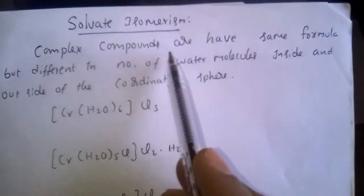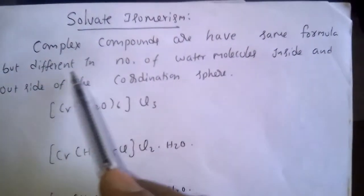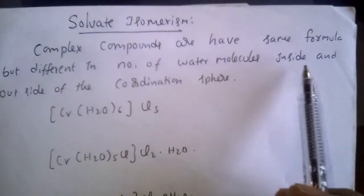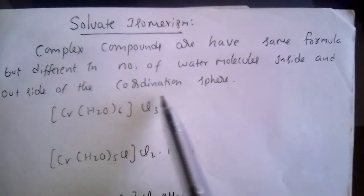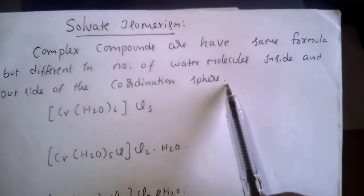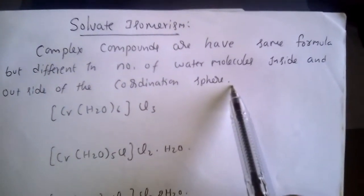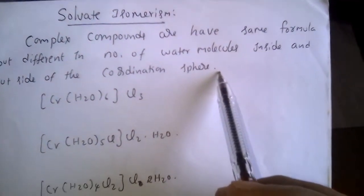Solvate isomerism: Complex compounds that have the same formula but differ in the number of water molecules inside and outside of the coordination sphere are called solvate isomers, and the phenomenon is known as solvate isomerism.